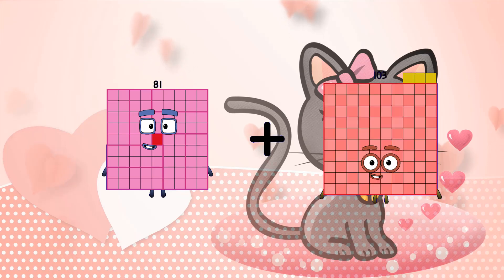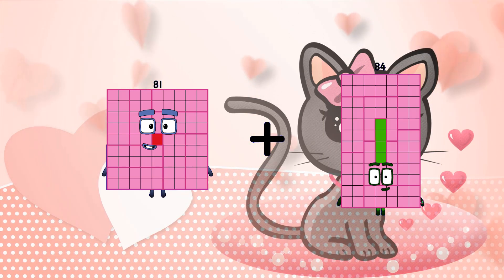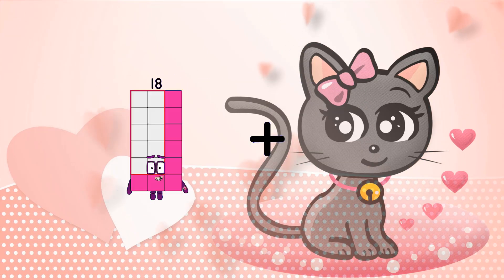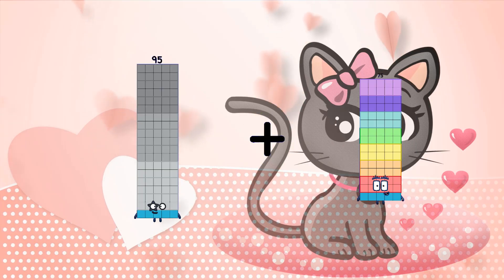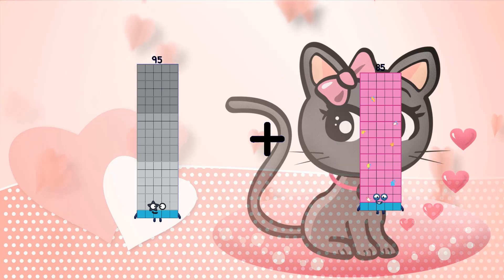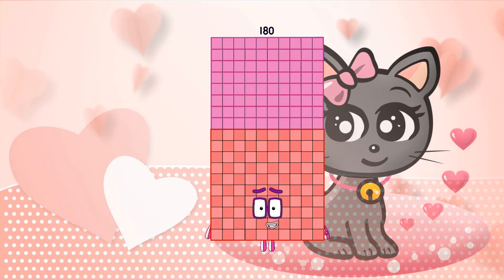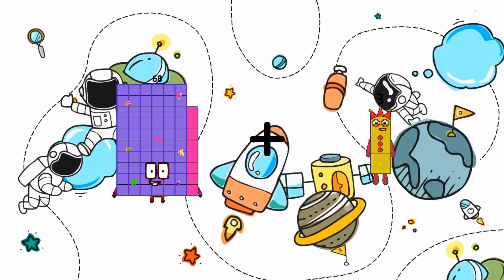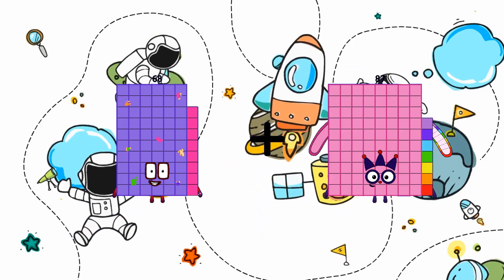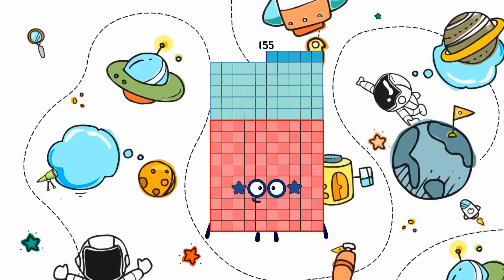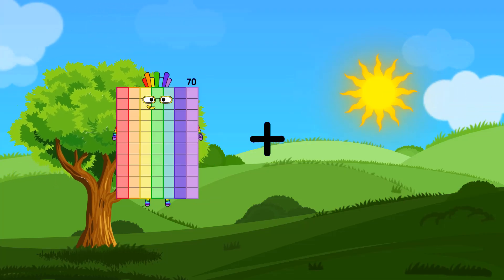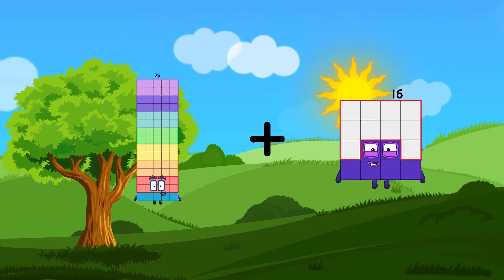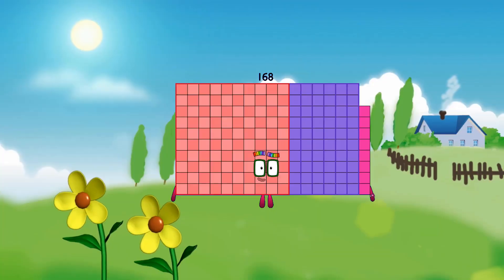81 plus 84 equals 165. 95 plus 85 equals 180. 68 plus 87 equals 155. 75 plus 93 equals 168.